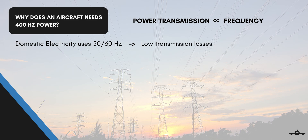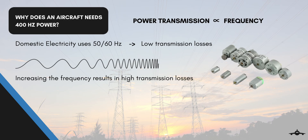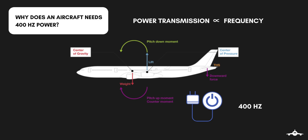A disadvantage of low frequency is that you will be able to see your bulb flickering. The electrical frequency is standardized around the world to 50 or 60 Hz. If you increase the frequency, transmission losses also increase. But the advantage is that you can reduce the size of electric motors for the same power. Since weight is of paramount importance in any aircraft, aircraft power supply uses 400 Hz, which reduces the weight and size of all equipment. Due to the large size of the aircraft, transmission losses are not significant enough to matter.